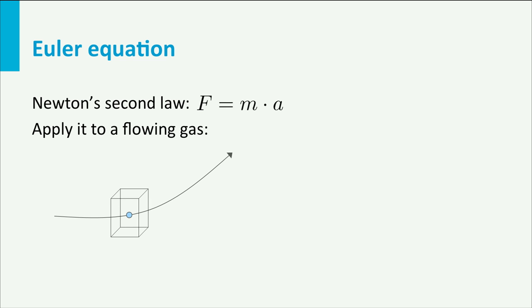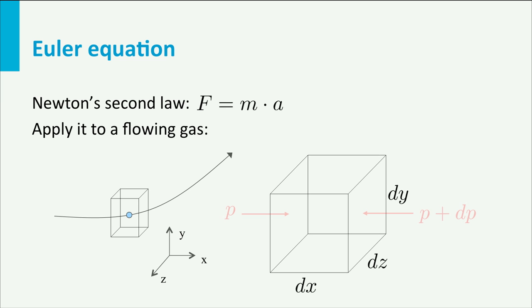Here we have a volume of air following a streamline. The sides of the box have the length dx, dy and dz. At the left side the pressure p is working, and at the opposite side we have p plus delta p.